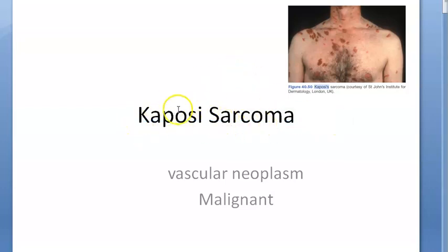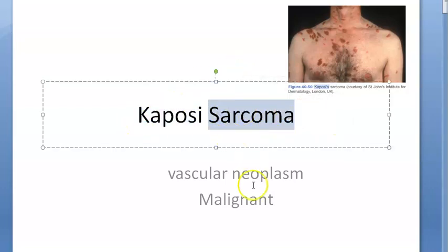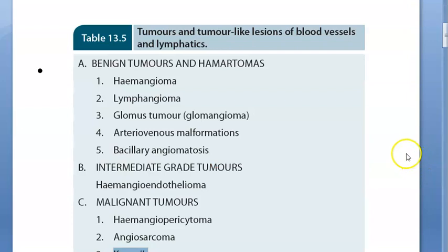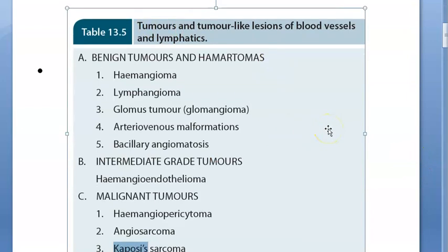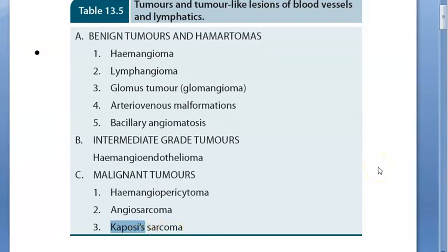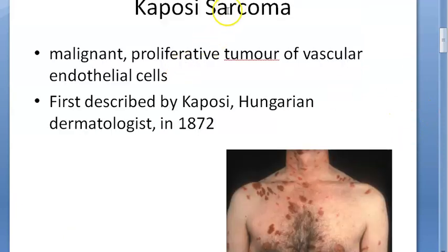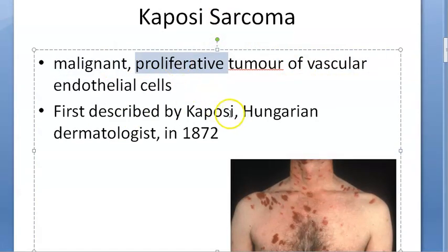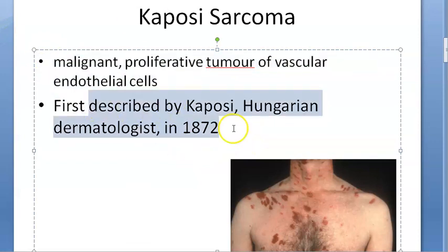In this video we want to look at Kaposi's sarcoma. Sarcoma means malignancy — it's a malignant neoplasm. It's vascular, meaning something to do with blood vessels. Under malignant tumors of blood vessels, you have Kaposi's sarcoma. It's important now because of its association with HIV patients. It's a vascular, malignant, proliferative tumor — specifically a vascular endothelial tumor, first described by the scientist Kaposi.